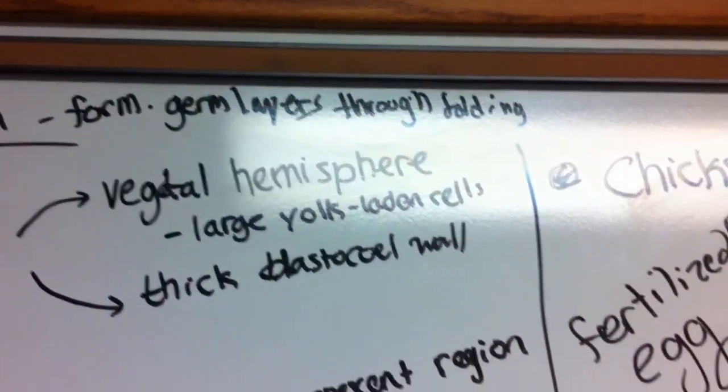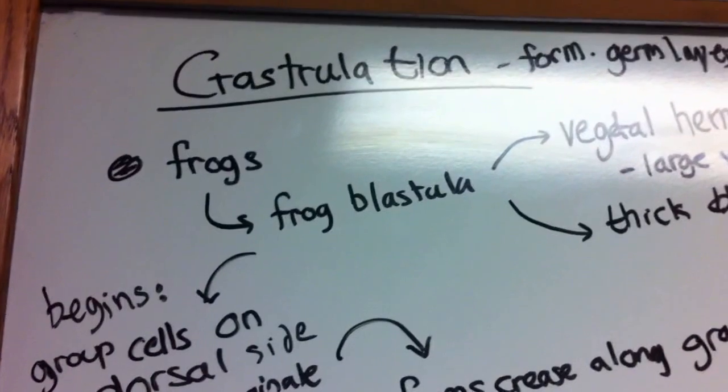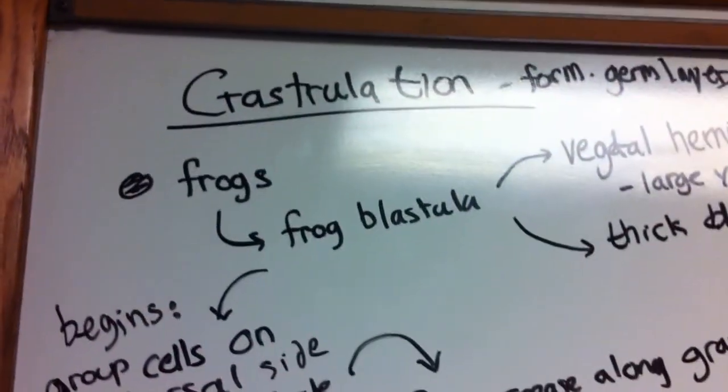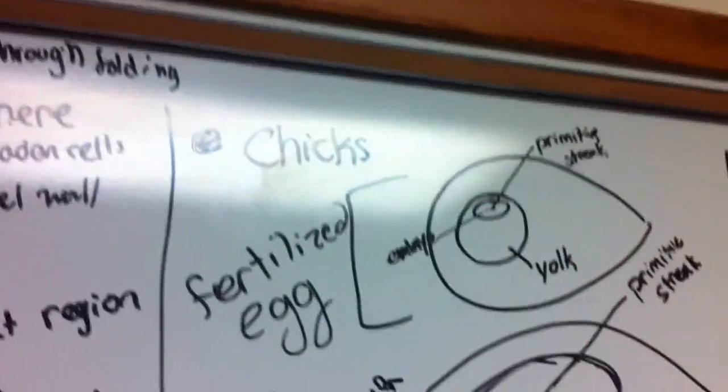Gastrulation is defined as the formation of germ layers through folding. Last time we talked about gastrulation in sea urchins. This time we're going to talk about gastrulation in frogs, chicks, and humans. So let's start with the frogs.